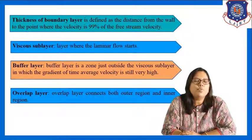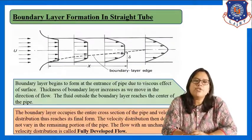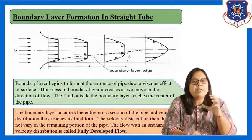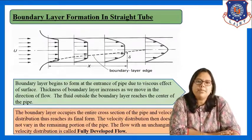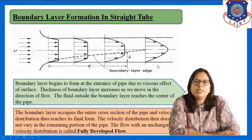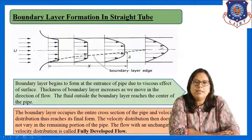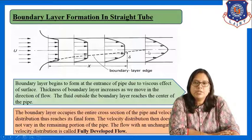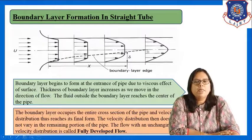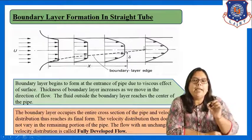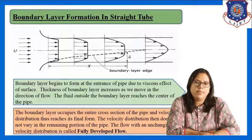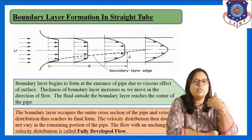Now, what if we have a tube or pipe? The next topic is boundary layer formation in a straight tube. The concept and principle is the same as boundary layer formation in a flat plate. As seen in the figure, there is a solid wall on both sides with zero velocity at the surface. The boundary layer begins to form at the entrance of the pipe due to the viscous effect of the surface, and the thickness of the boundary layer increases as we move in the direction of flow.